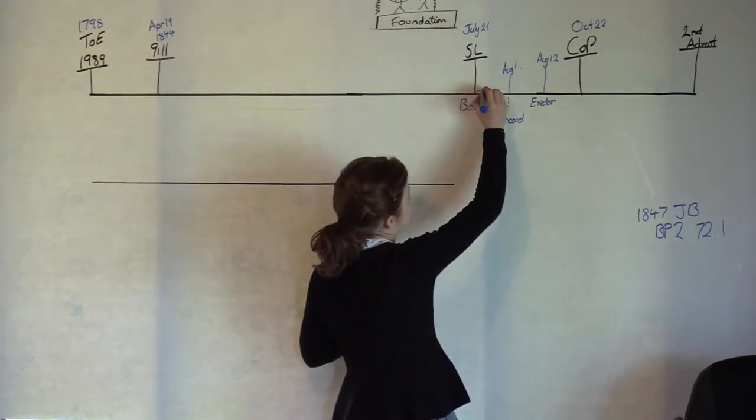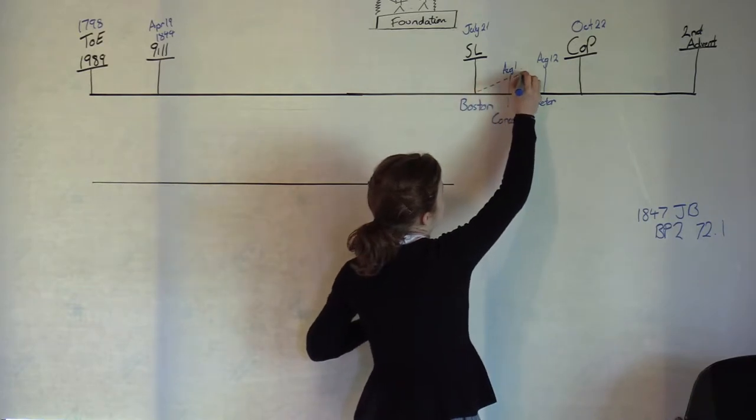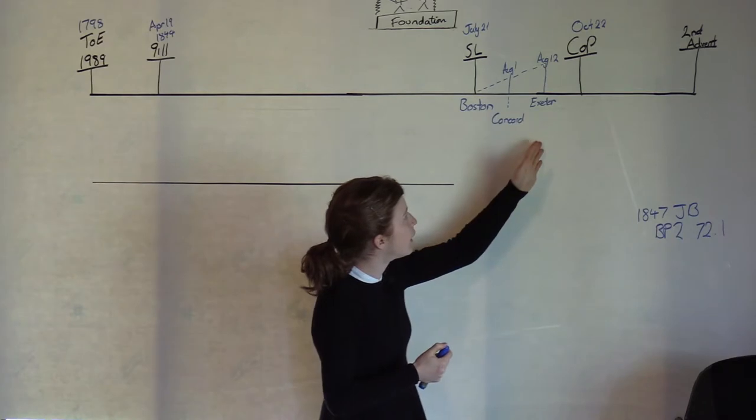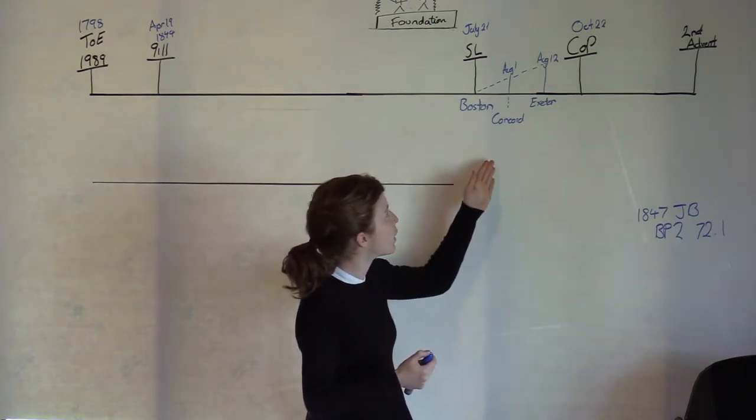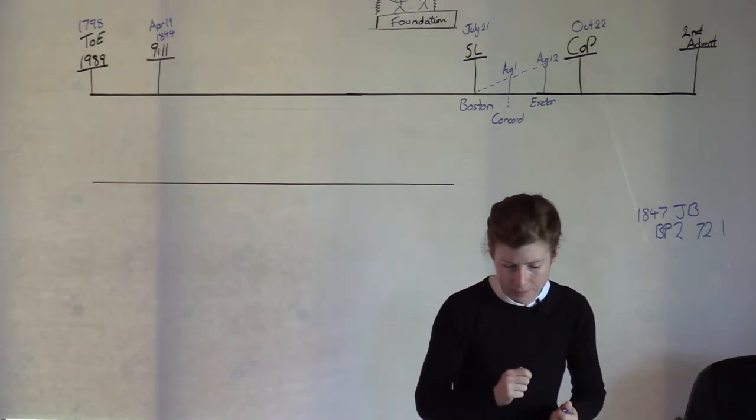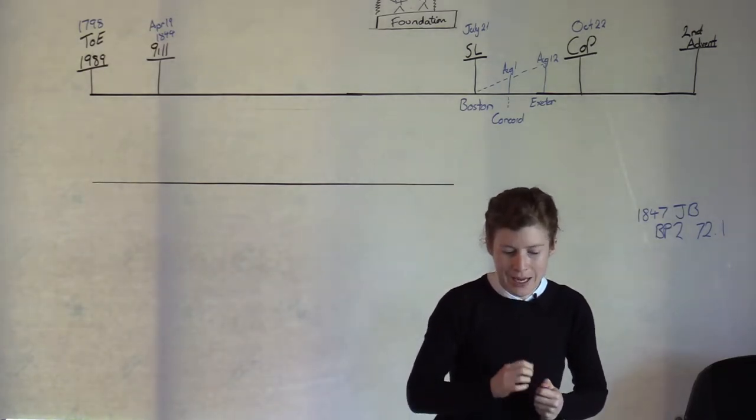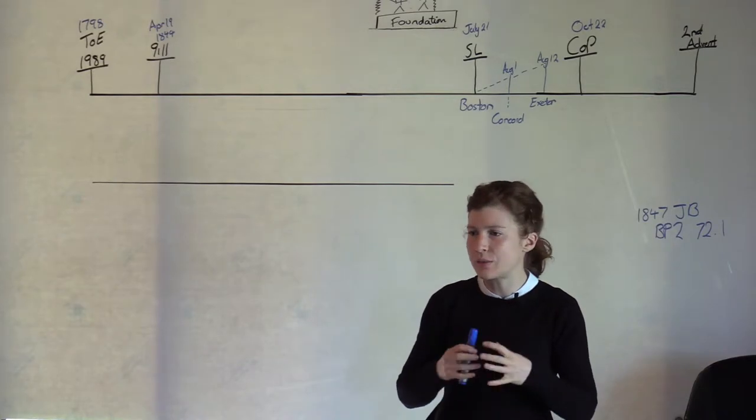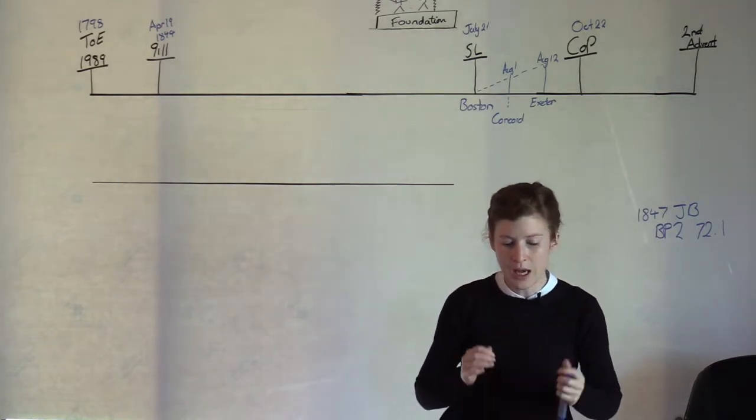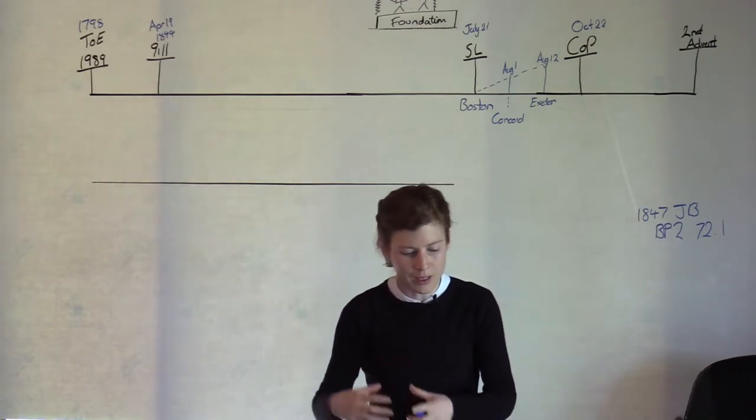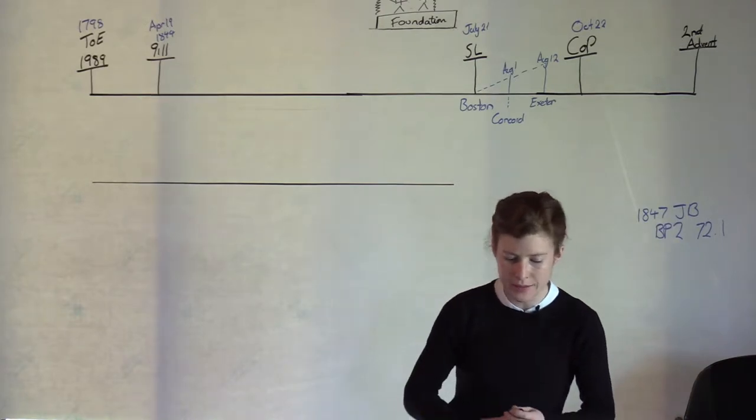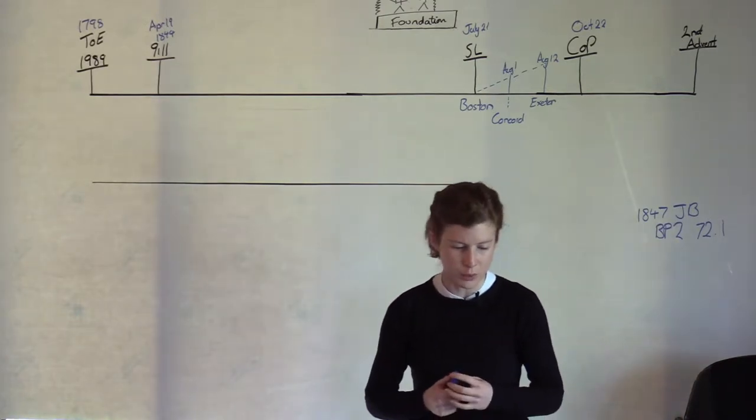So three camp meetings from the beginning of the midnight cry through to the waymark we would associate with it from July 21: Boston, August 1 Concord, August 12 Exeter. And this is the swelling of the loud cry. Boston and Exeter, this isn't new information, but Concord is what I want to spend a reasonable amount of time on. We have here three dates which compose the swelling of the loud cry.